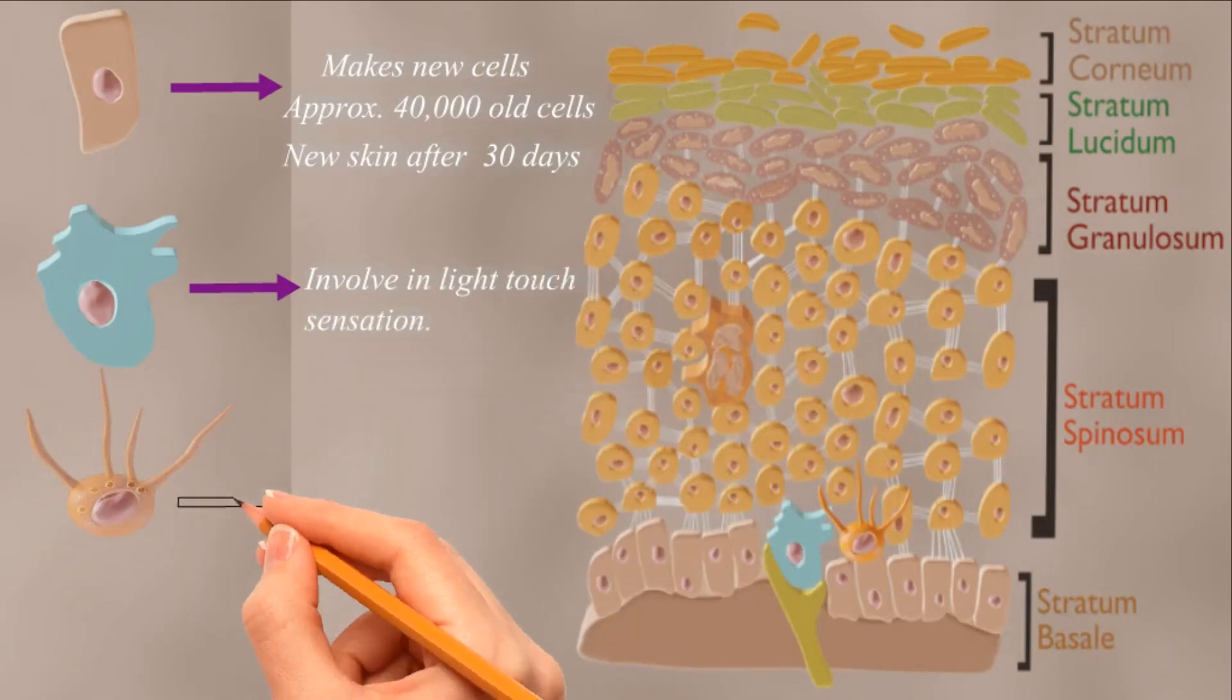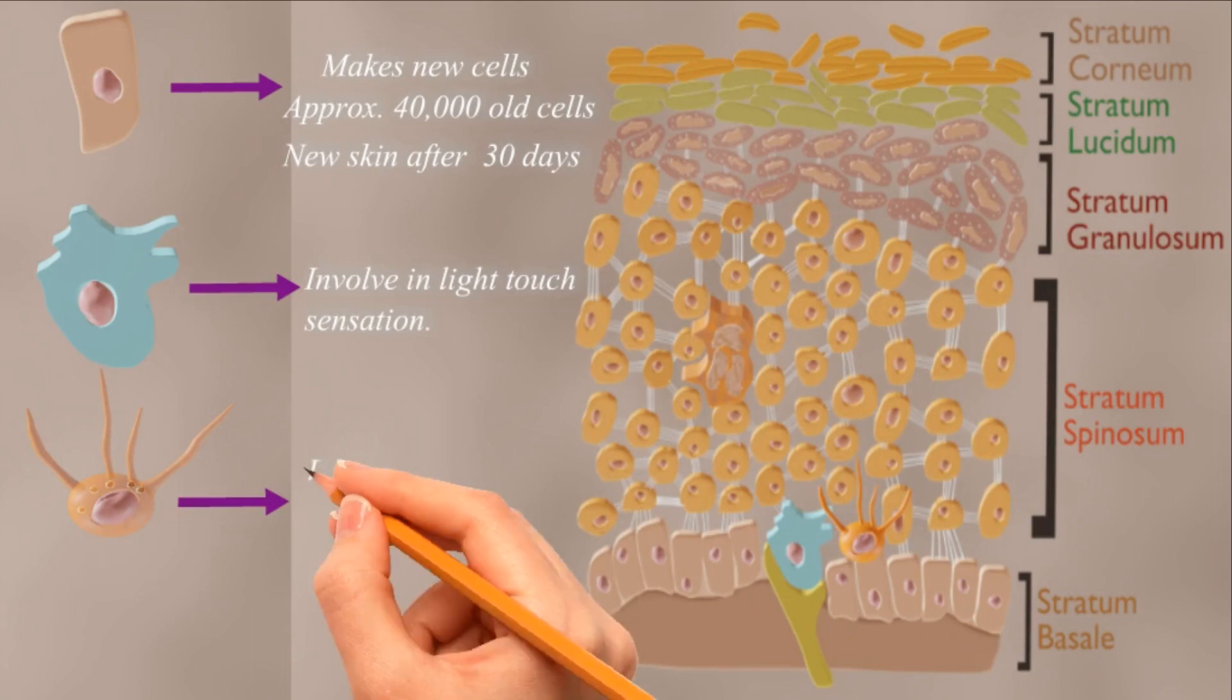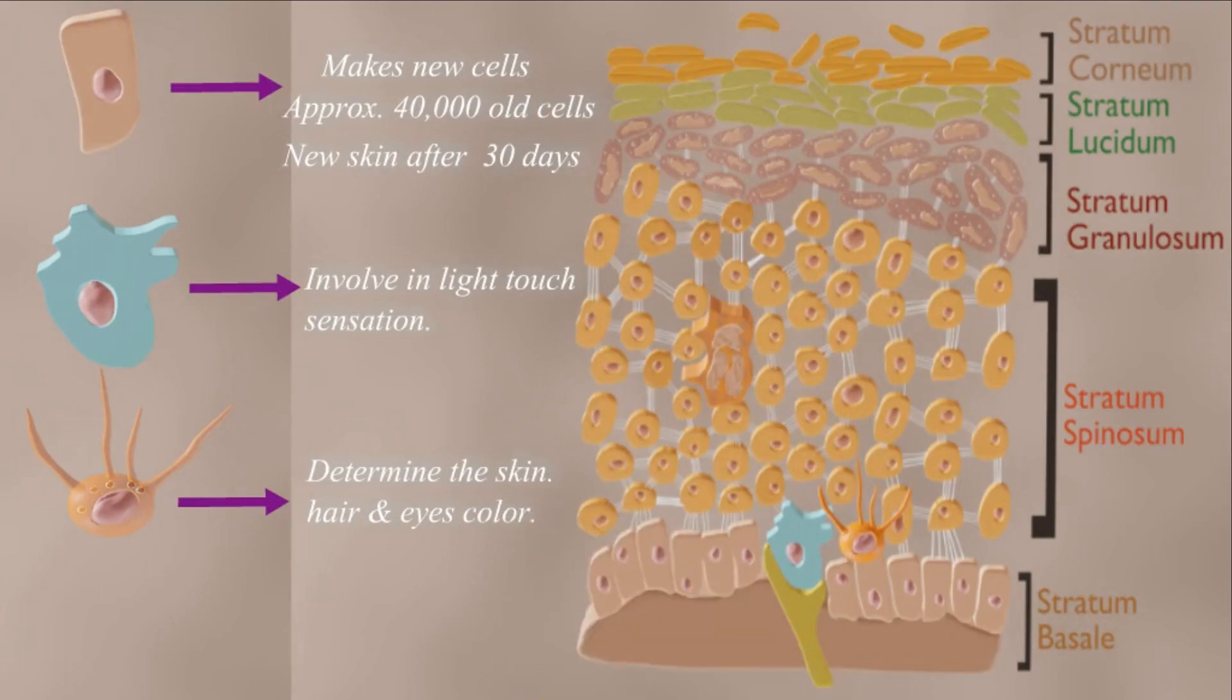Melanocytes have melanosomes in which production of melanin takes place. The amount of melanin determines the color of your skin, hair and eyes. People who make more melanin have darker skin and may tan more quickly. Langerhans cells in the epidermis are part of the body's immune system. They help fight off germs and infections.